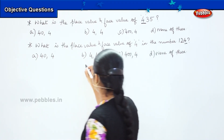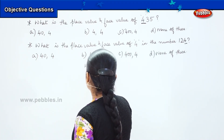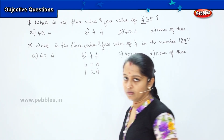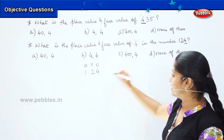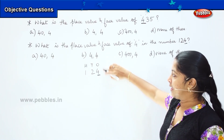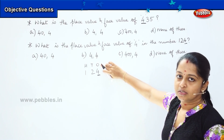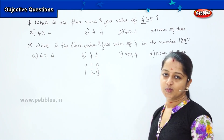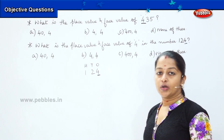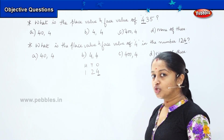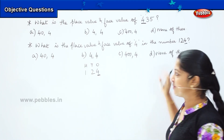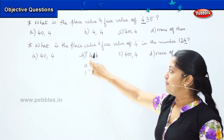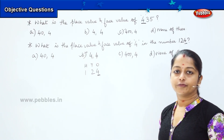What is the first step? We need to segregate it in the HTO column and write the number in their respective columns. What is the digit which we have to find? It is number 4. And where is it seated? It is under the ones column. So my place value will be 4. And what about the face value? Face value will remain the same, so my answer should be 4 and 4. That is option B — place value is 4 and face value is also 4.